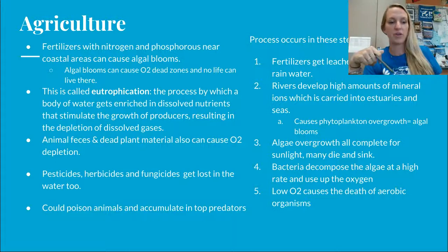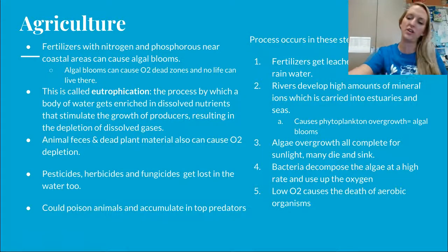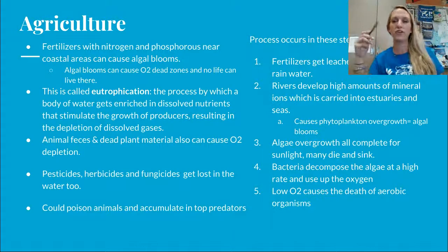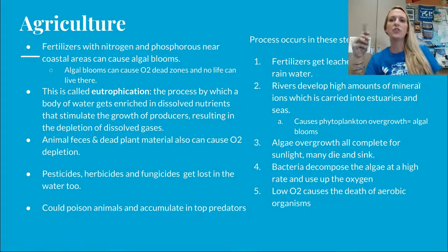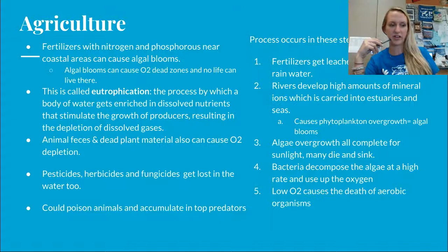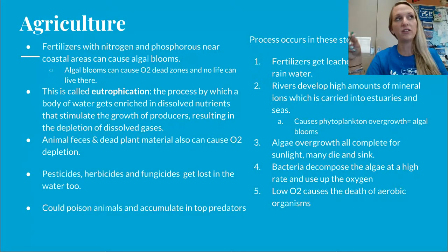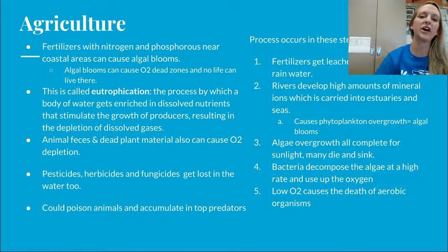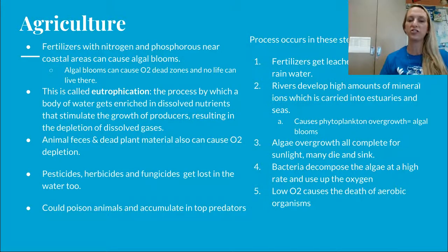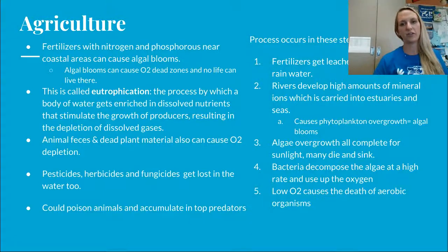The process of eutrophication from agriculture: fertilizers get leached into rivers and rainwater, carrying high amounts of mineral ions like nitrogen and phosphorus to estuaries and seas, causing planktonic overgrowth or algal blooms. The algae compete for sunlight, use all resources, and die in sync. Bacteria decompose the algae at a fast rate using up oxygen, resulting in really low oxygen levels.